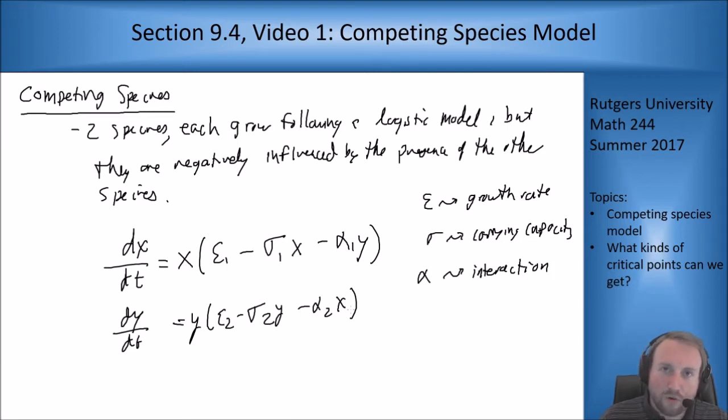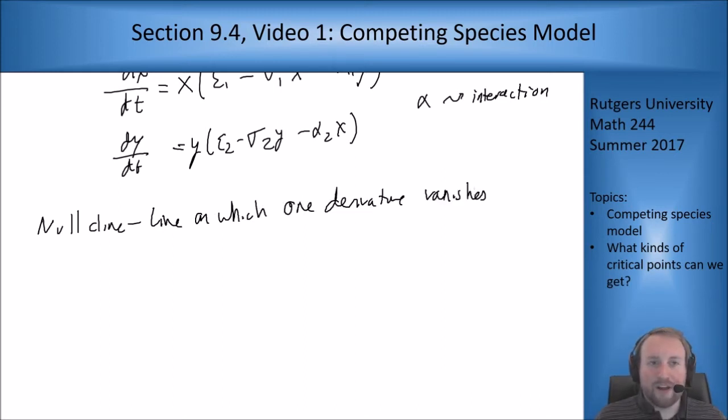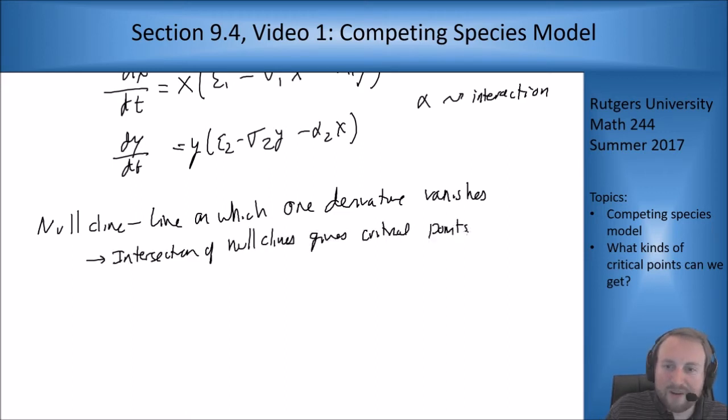We can use another tool to help us get there a little bit faster and see what's going on in the equations beyond just critical points. That's the idea of nullclines. What we mean by a nullcline is a line on which one derivative vanishes. If I have a critical point I need both derivatives to vanish, but the nullcline can give us a line on which one derivative vanishes. The intersection of nullclines gives critical points, because if the two of them intersect then they are both zero at that point.